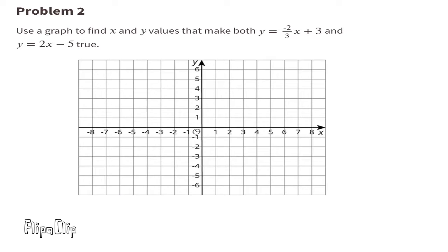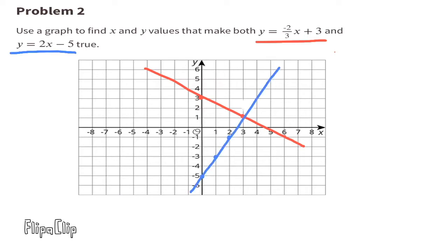Problem number 2. Use a graph to find x and y values that make both these equations true. The line for the first equation should intersect the y-axis at 3 and have a slope of negative 2 thirds. The second equation should have a line that intersects the y-axis at negative 5 and have a slope of 2. The point where these two lines meet or intersect will have the ordered pairs x and y that make both equations true. The ordered pair (3, 1) makes both equations true.